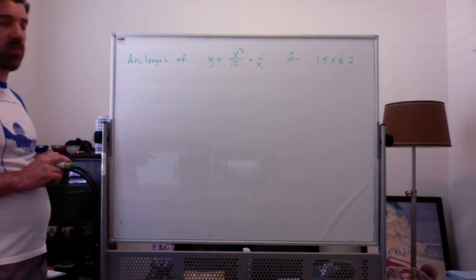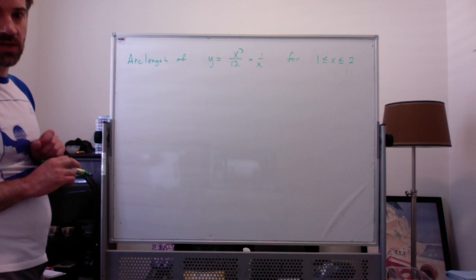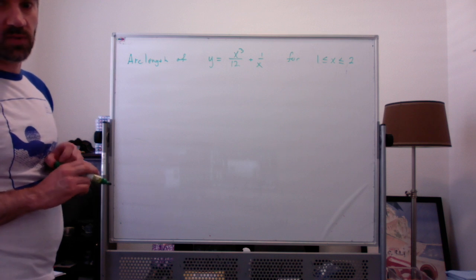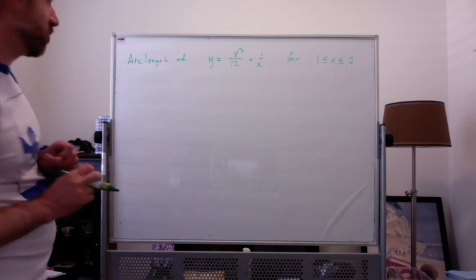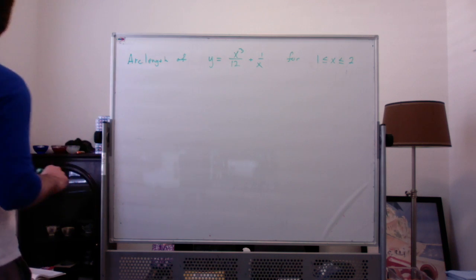I want to find the arc length of y equal to x cubed over 12 plus 1 over x for x between 1 and 2.